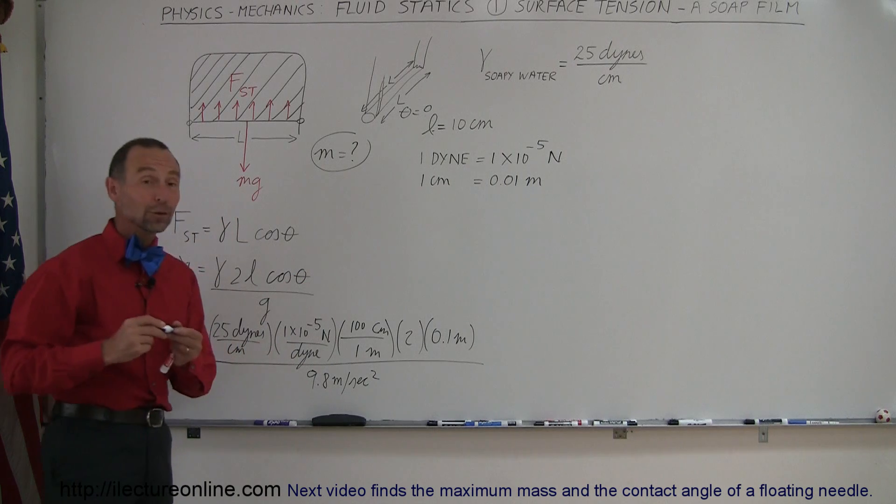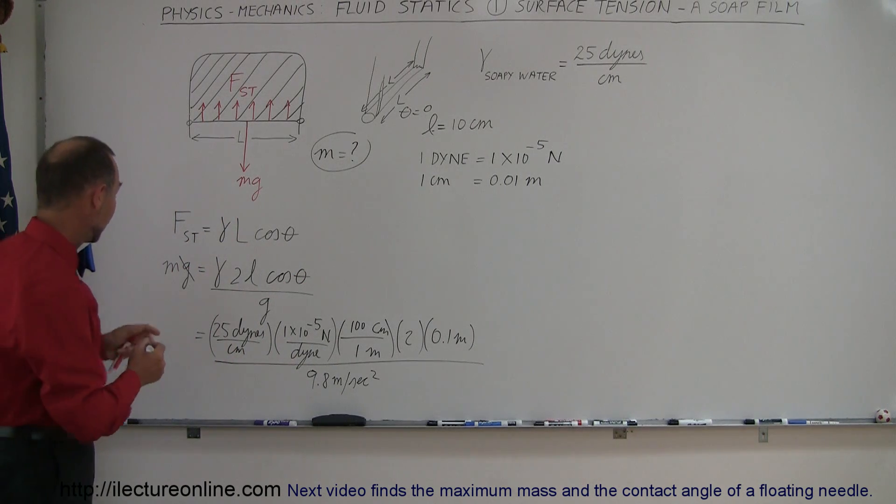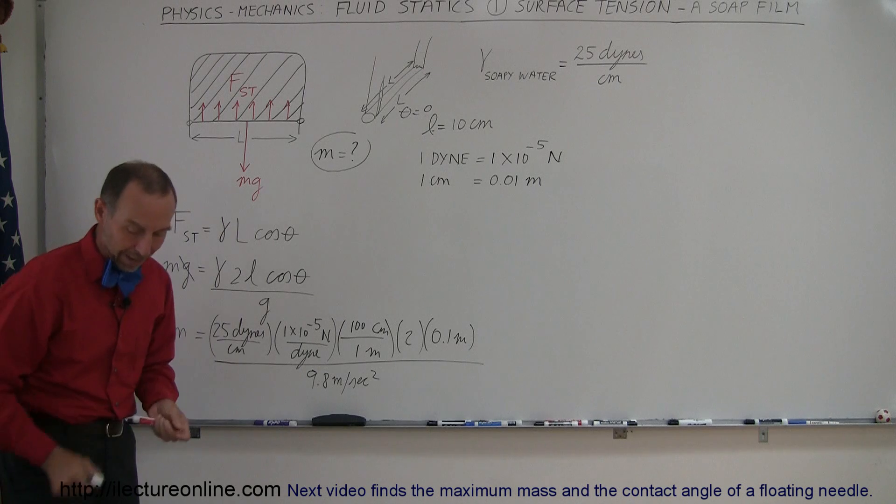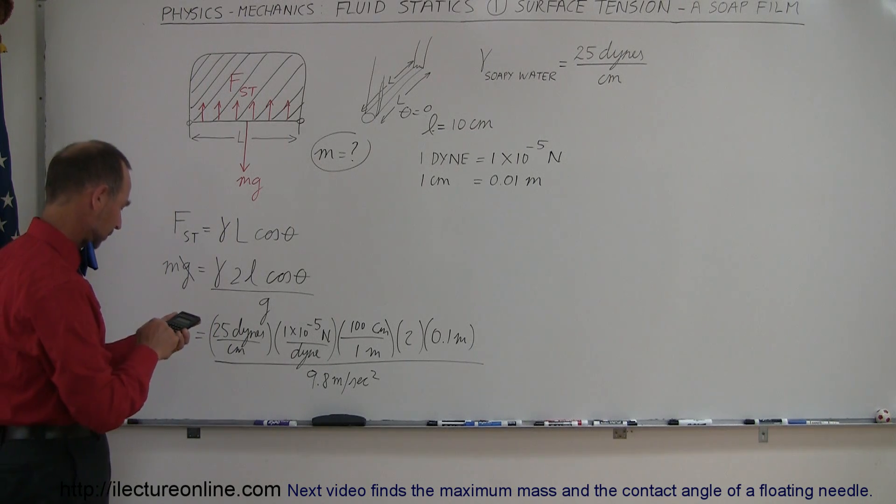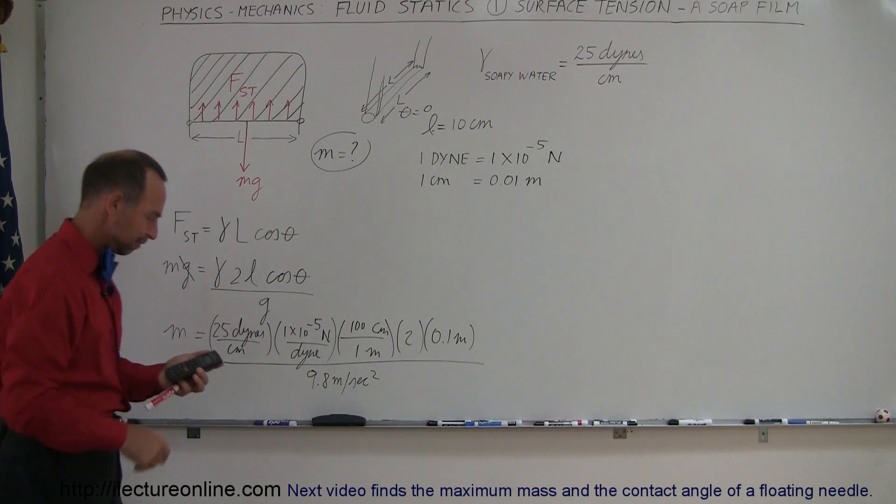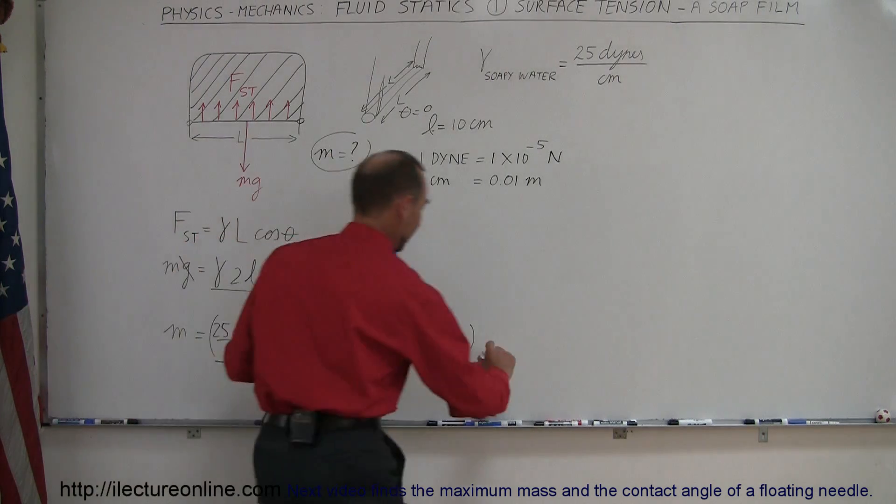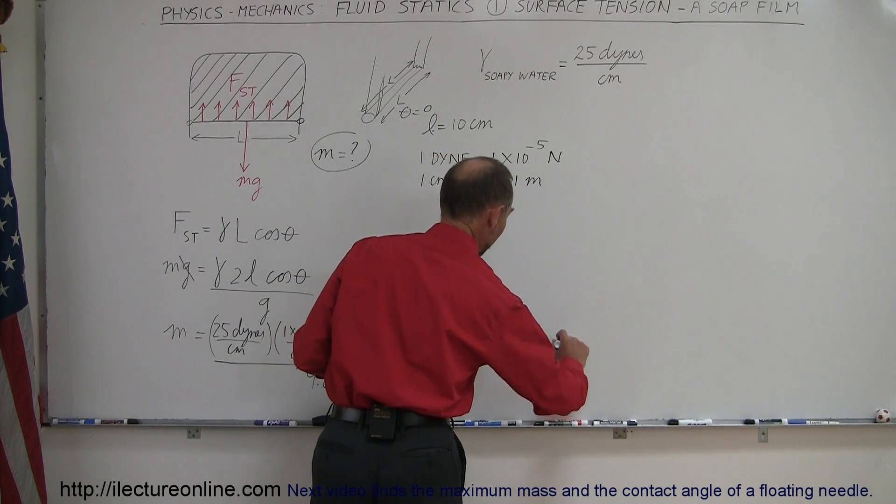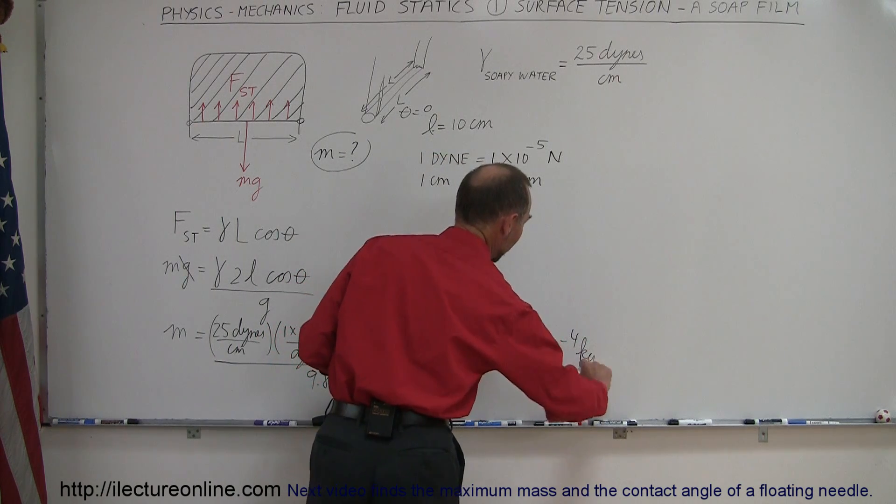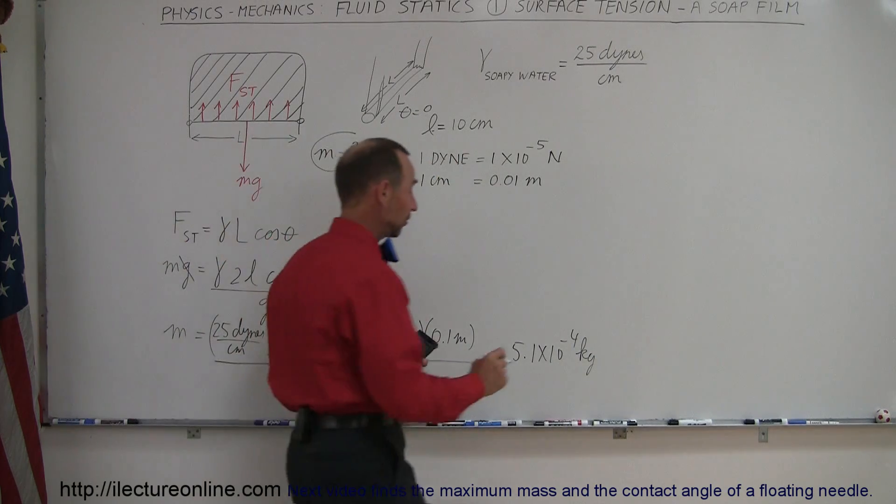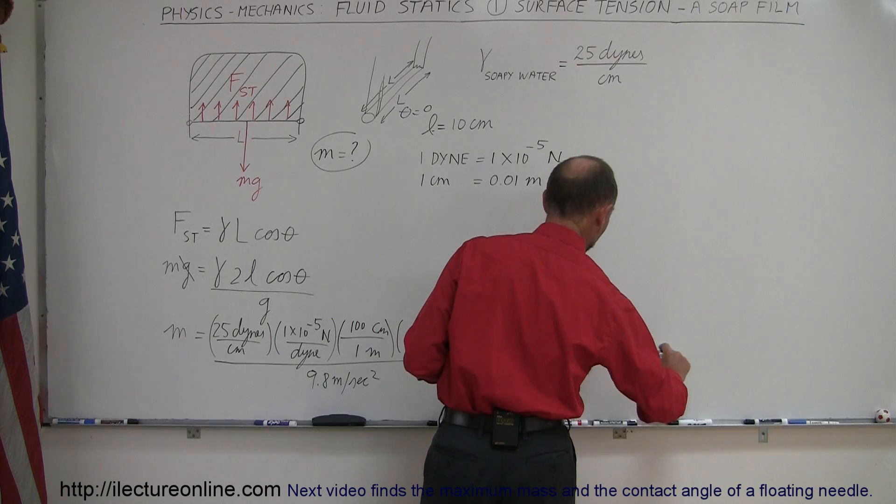And if we work out all those units, we'll get the result for the mass in kilograms. Alright, so 25 times 1e to the minus 5 times 100 times 2 times 0.1 and divide by 9.8. And we get, let's see here, 5.1 times 10 to the minus 4. So we get 5.1 times 10 to the minus 4 kilograms. And then of course if we convert that to grams, which makes a little bit more sense, then this would be equal to 0.51 grams.